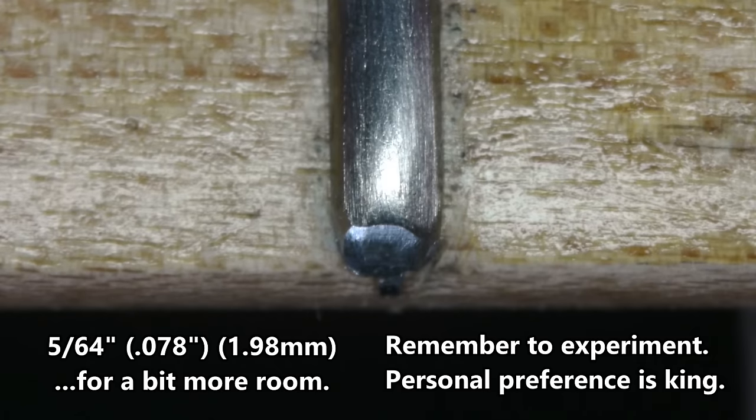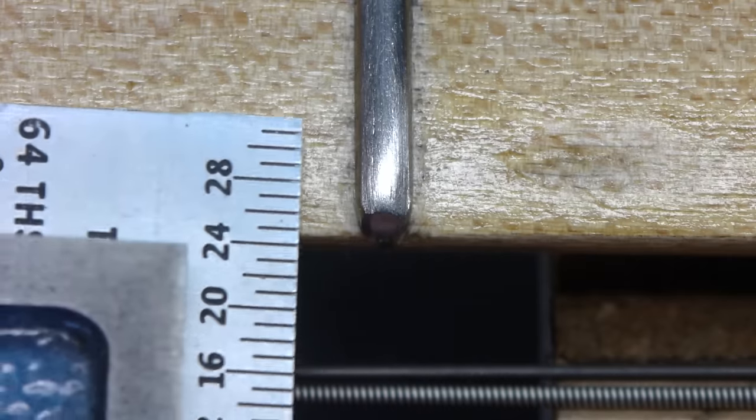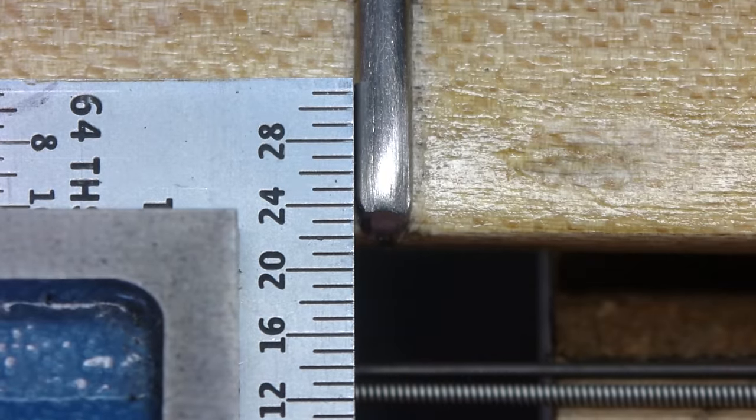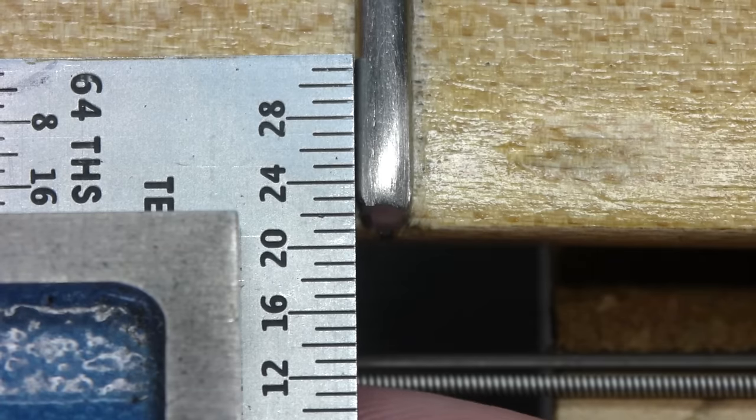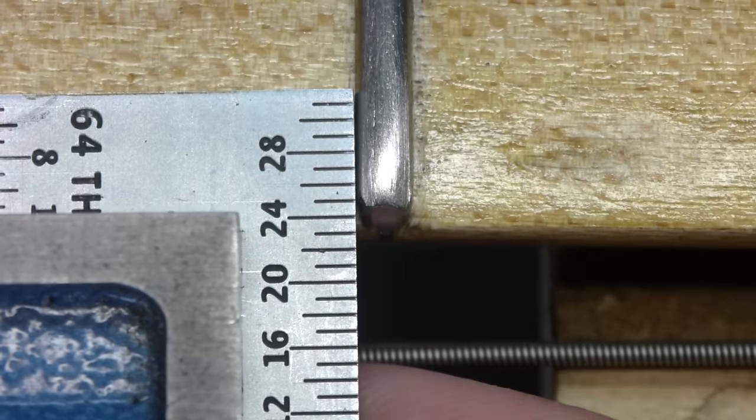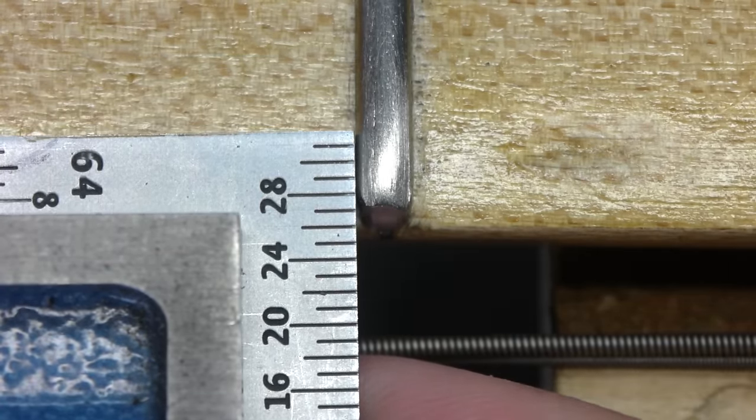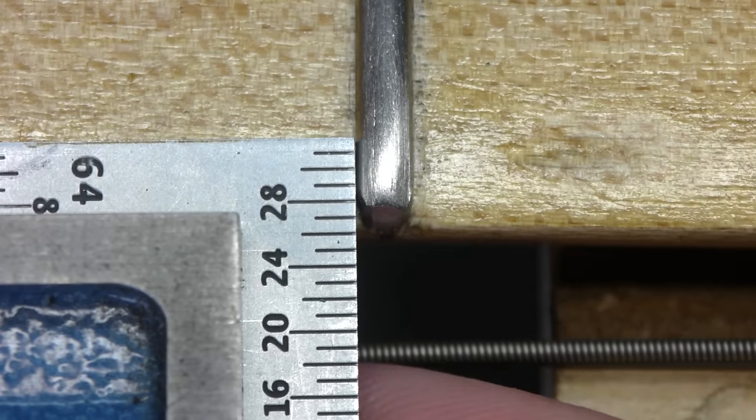That would be about 63 thousandths of an inch, or 1.58 millimeters. Put the ruler of the double square right up against the edge of the first fret, then adjust the ruler as needed until the 4 64ths marking is exactly in line with the edge of the fret bevel. Then firmly lock the ruler in place.